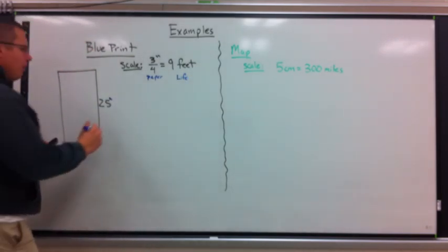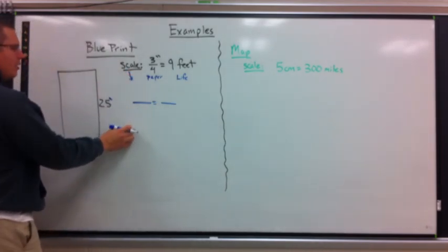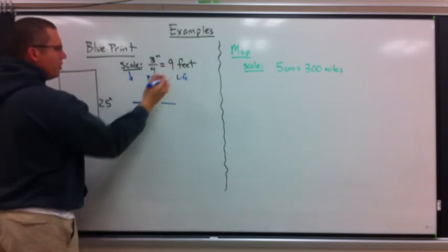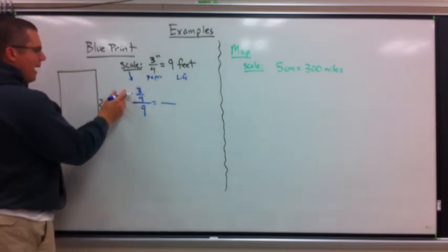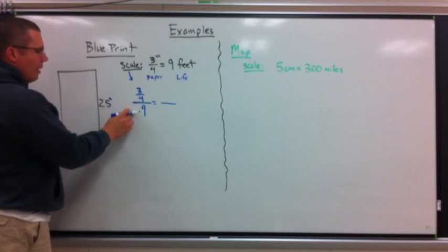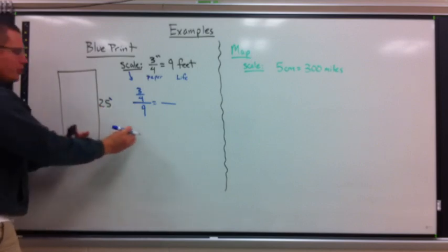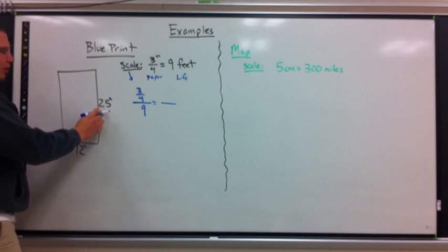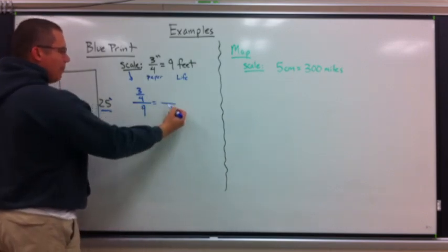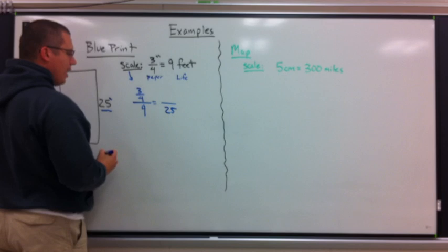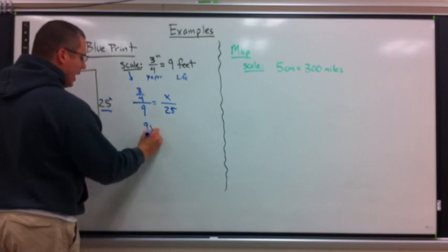We set up our blank proportion — remember the scale goes on the left-hand side. So we have three-fourths equals nine: the top number is the paper number, and the bottom number is the real-life number. We want to figure out what the 25-foot measurement would be on paper. The answer is not 25 because that's real life, so 25 goes on the bottom. We don't know the paper measurement, so we put x on top.